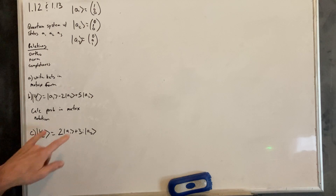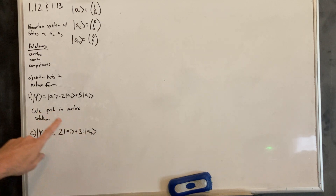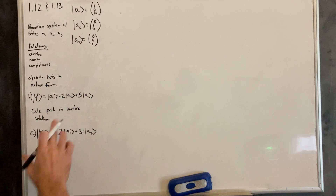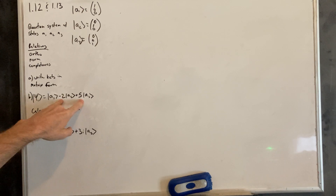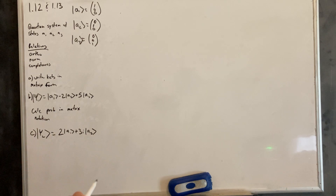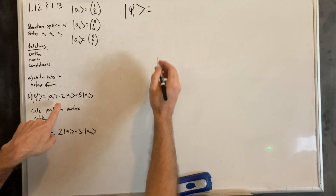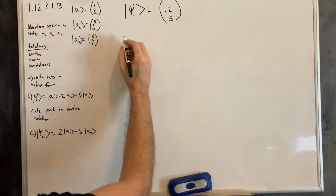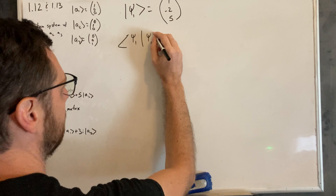Then part B: we're given a state and we want to calculate the probabilities in matrix notation. The state is 1·A1 minus 2·A2 plus 5·A3, and this is not normalized. If we square each term and add them up, we get 25 plus 4 plus 1, which is 30 — not 1. So we do need to normalize this. In matrix form this state is the column vector (1, -2, 5). We inner product it with itself, since that should equal 1 if it's normalized.